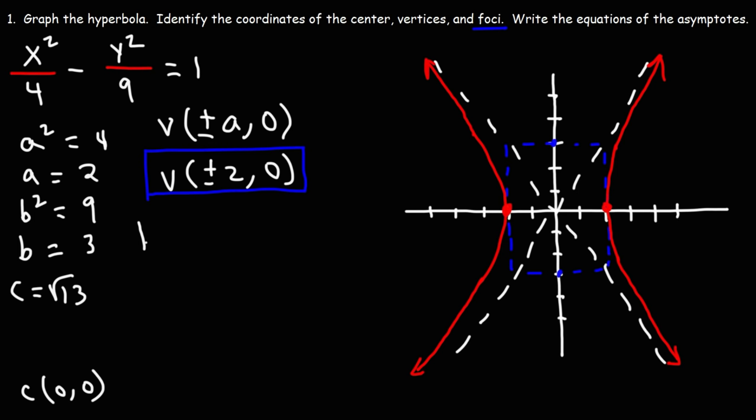These two points represent the vertices of the hyperbola. For a horizontal hyperbola not centered at the origin, the vertices are h plus or minus a comma k. H is 3, a is 2, k is negative 2. So the first vertex is 3 plus 2 comma negative 2, which is (5, negative 2). The second vertex is 3 minus 2 comma negative 2, which is (1, negative 2). Those are the coordinates of the vertices.